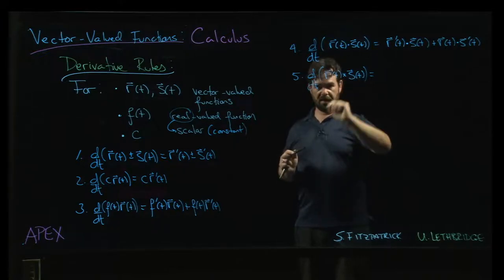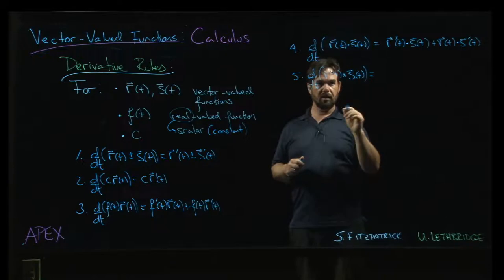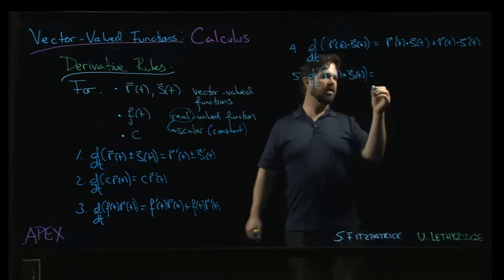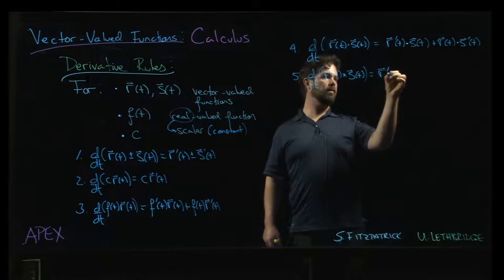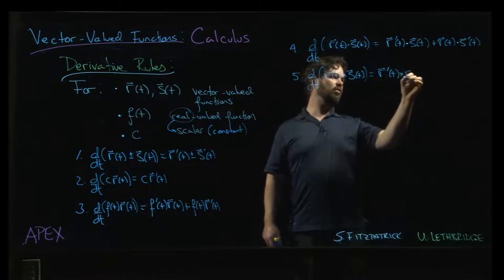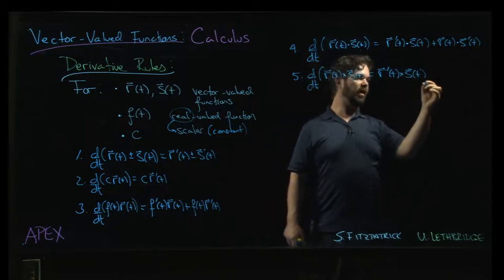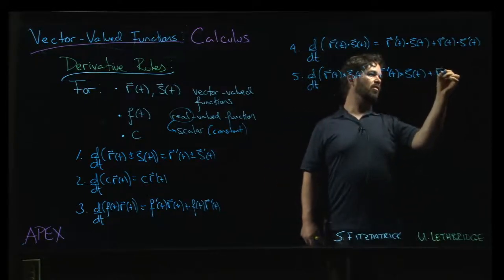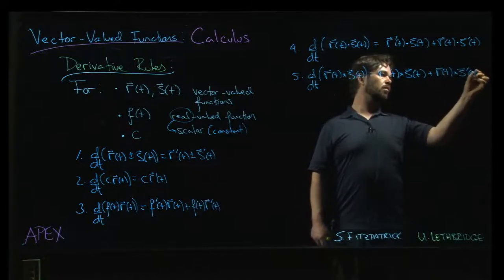But you have to pay attention with cross product. Because order matters for the cross product. If I change the order of multiplication, I'm going to be off by a minus sign. So here, if you keep that pattern, you'll actually be okay. So it'll be r prime crossed with s plus r crossed with s prime.